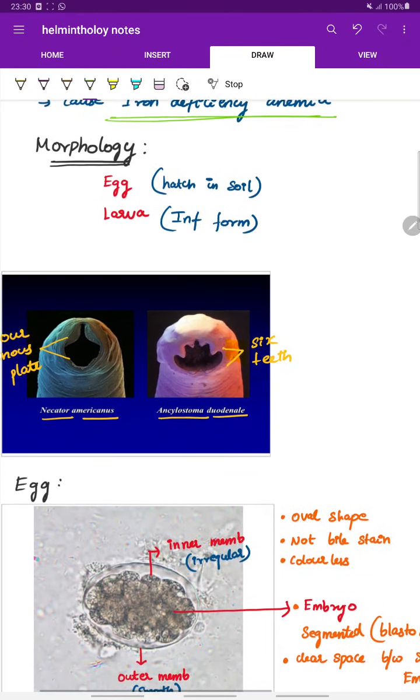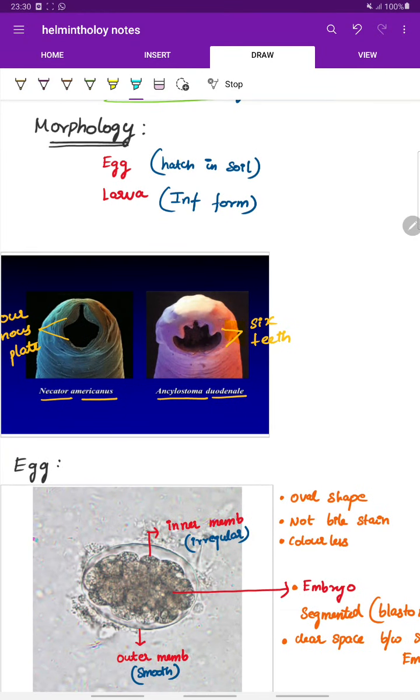Morphology: there are two forms, the egg which hatches in the soil and the larva which is the infective form.